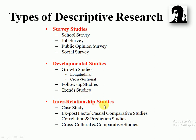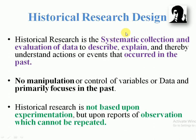Inter-relationship studies involve gaining knowledge from in-class studies and composition studies. Most inter-relationship studies are made within the same group. There are eight types of descriptive research overall. Descriptive research is present-oriented.